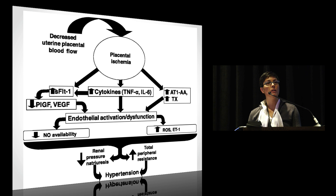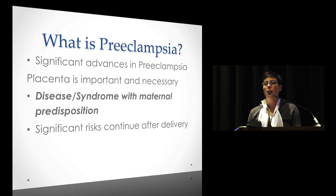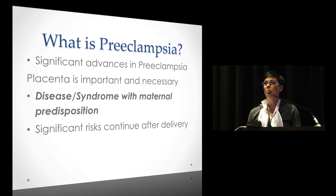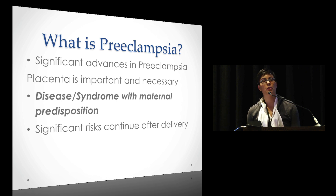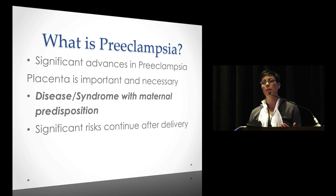That's what we see when we see the clinical manifestations of preeclampsia. We also have to talk about predisposition. The emerging thought is there is a maternal predisposition — that preeclampsia unmasks something the woman brings into the pregnancy, similar to how a gestational diabetic is at risk for type 2 diabetes. The same thing happens with this preeclampsia syndrome.